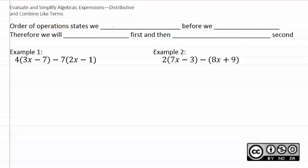Now remember, with the order of operations, multiplication comes before addition. So in this case, order of operations states we multiply before we add. For that reason, we use the distributive property before we combine like terms. So we will distribute and then combine like terms.